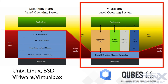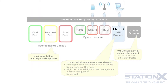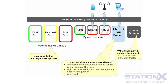An attacker must be capable of subverting the Xen hypervisor itself in order to compromise the entire system, which is more difficult than subverting a host on a type two virtual machine like VMware or VirtualBox. There is no full host OS to compromise with a type one hypervisor like Qubes uses. This is a security advantage Qubes has over VMware and VirtualBox.